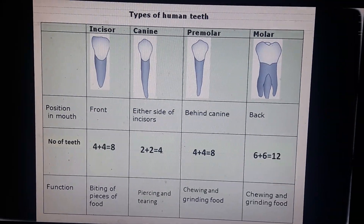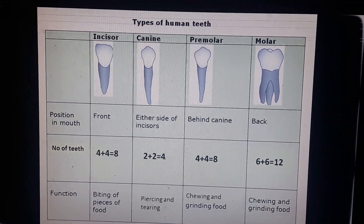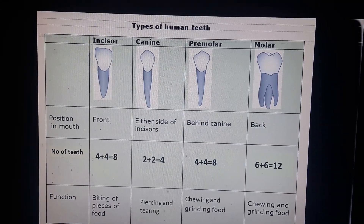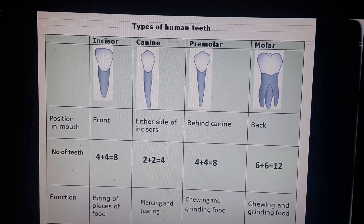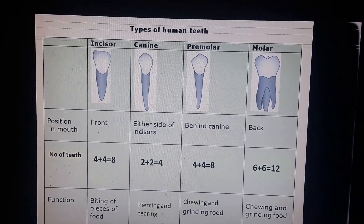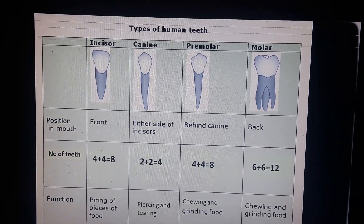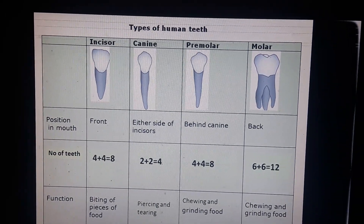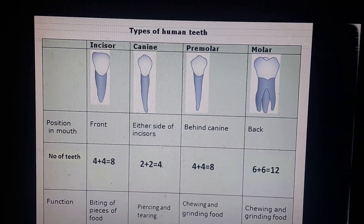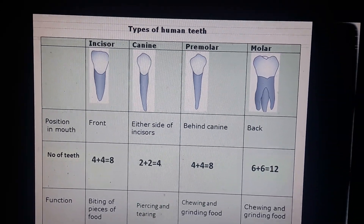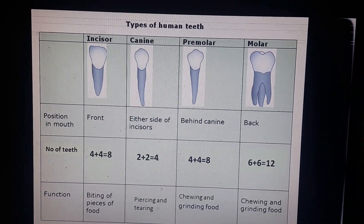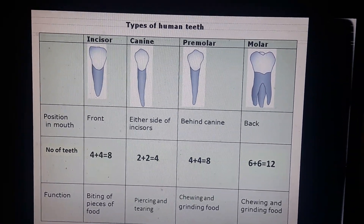There are 16 teeth in each jaw, with a total of 32 teeth in the mouth cavity. In young people there are a total of eight molars. The second set of four molars develops at the age of 18 or more — these are called wisdom teeth.